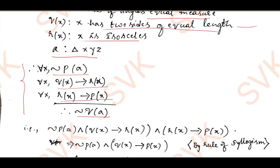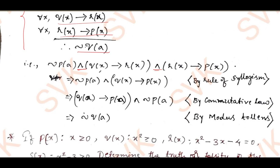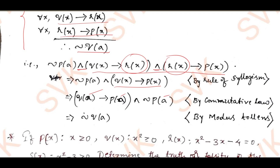As in the previous problem, I will take all propositions using conjunction. I can apply rule of syllogism first: from q(x) implies r(x) and r(x) implies p(x), I got q(x) implies p(x). I am left with negation p(a) conjunction q(x) implies p(x). By generalizing and replacing x with a, I got q(a) implies p(a) conjunction negation p(a). By Modus Tollens, I can write that as negation q(a). Hence, the given statement is a valid argument.